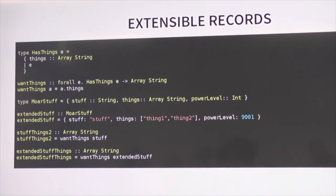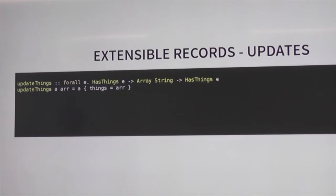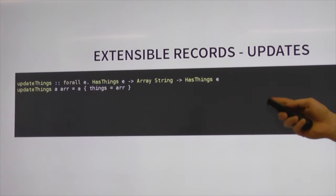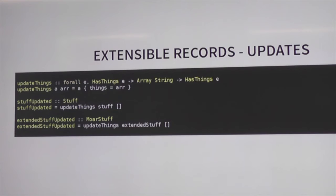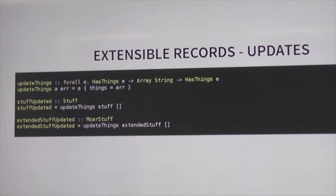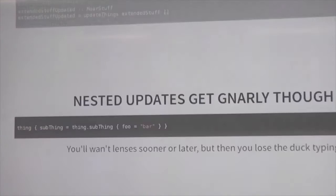Updates work in the same way. I can take any record that has 'things' and a new array of strings, and set them into the record, completely leaving everything else that was in there alone. I can update my Stuff with an empty array, update my extended stuff with an empty array, and everything I'm not updating just stays the same. And what's even better is that these things are immutable, so you don't have to worry like you do in JavaScript. I caused so many bugs by changing objects that other things were relying on. The underlying JS takes care of copying for you.